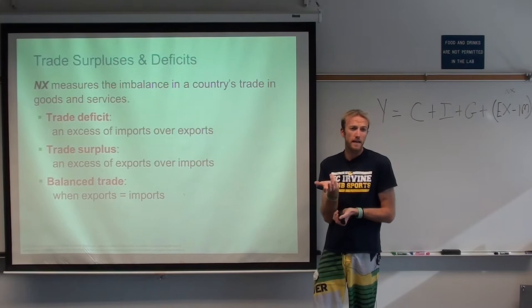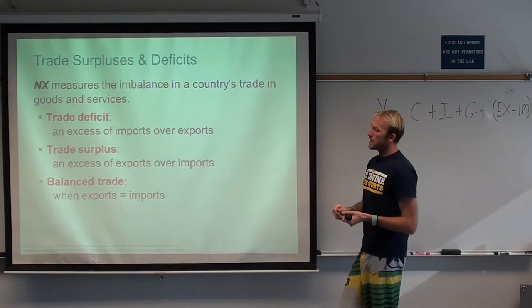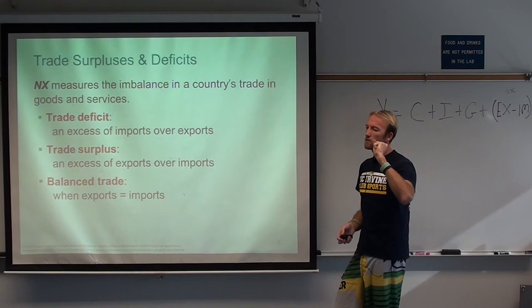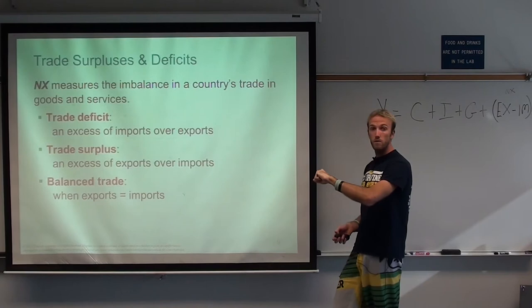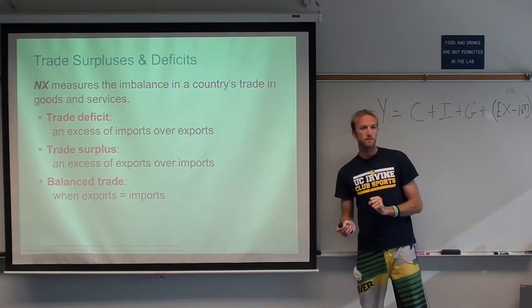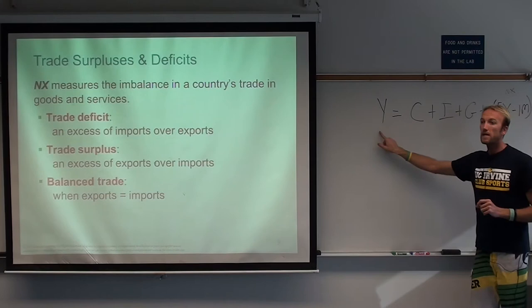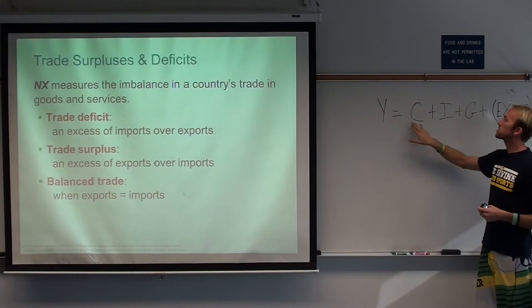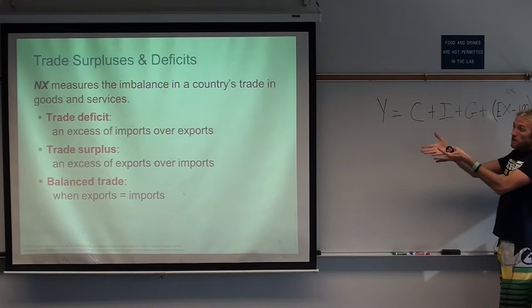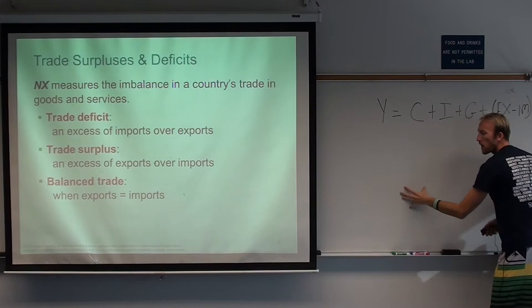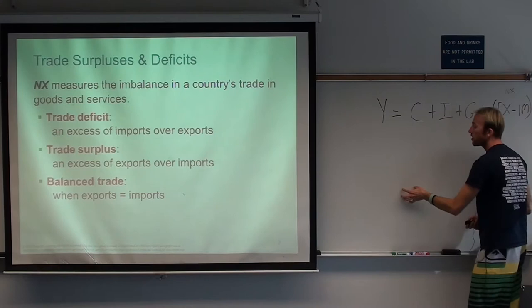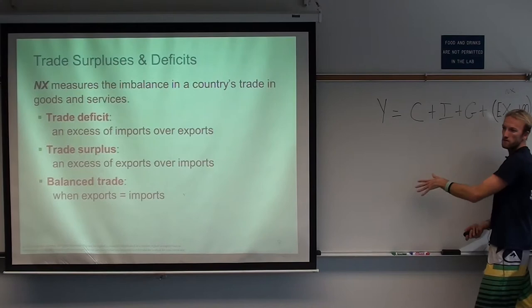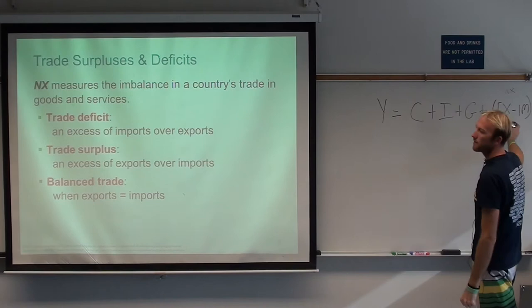In balanced trade, imports and exports are equal and net exports is zero — but that doesn't mean they're not trading. Earlier in this class we assumed net exports equals zero under the assumption of no trade at all, but we can also have net exports equal zero in a trading world as long as there's balance. When it's balanced, net exports doesn't affect GDP and investment still equals savings. Investment doesn't equal savings only when there's a trade deficit or surplus.